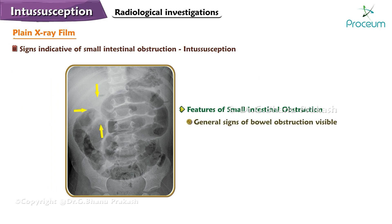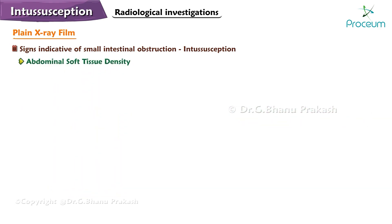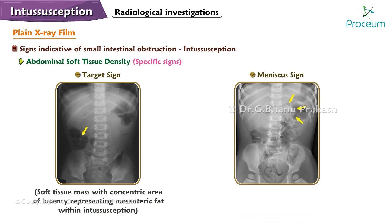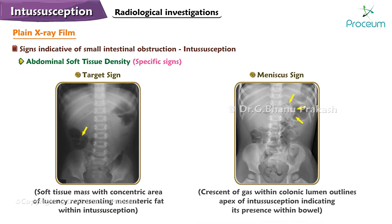General signs of bowel obstruction may be visible. In some cases, specific signs can be observed on plain X-ray, such as the target sign — a soft tissue mass with a concentric area of lucency representing mesenteric fat within the intussusception — and the meniscus sign, a crescent of gas within the colonic lumen that outlines the apex of the intussusception, indicating its presence within the bowel.